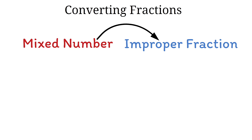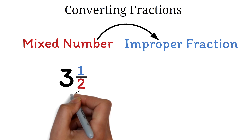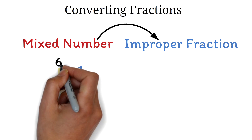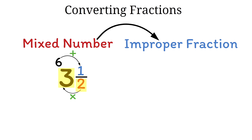First, let's discuss turning mixed numbers into improper fractions. Let's say we had 3 and 1 half as our mixed number. To convert it into an improper fraction, we'll follow these simple steps. First, we'll multiply the denominator by the whole number — so we'll multiply the 2 by the 3. 2 times 3 is 6. Next, we'll add the result to the numerator — so we add the 6 to the numerator, which is 1. 6 plus 1 equals 7. So this 7 becomes the numerator for the improper fraction. Finally, we'll use the same denominator, which was 2. Therefore, the answer is 7 over 2.